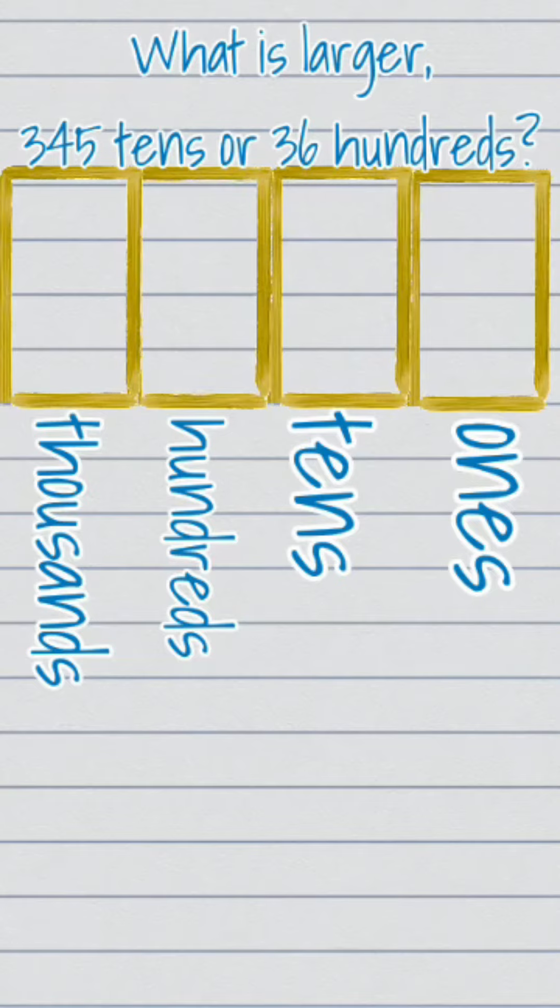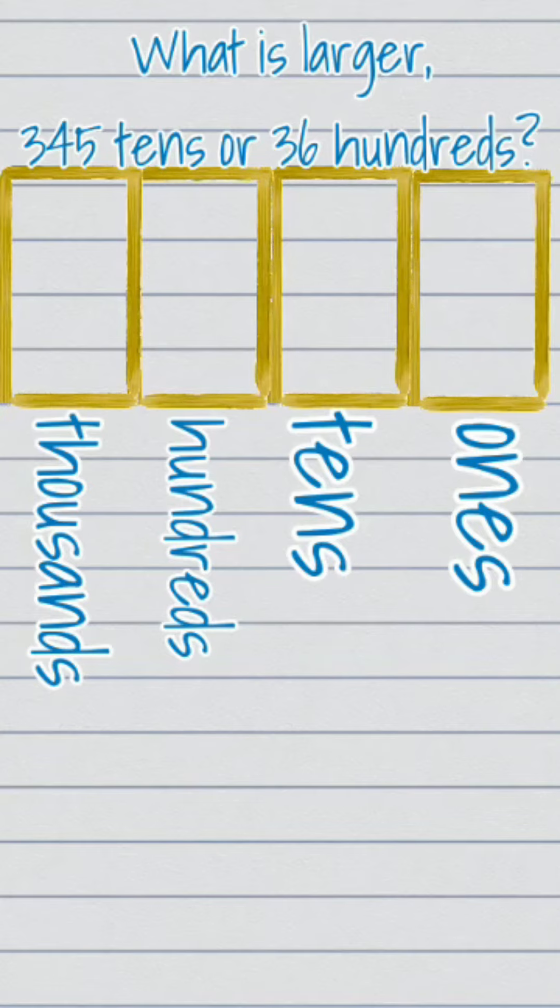Pause this video and try to put these digits in the correct place value on your place value chart. What do you notice? 345 tens, can that fit in the tens place?